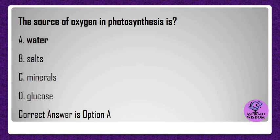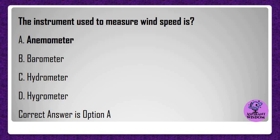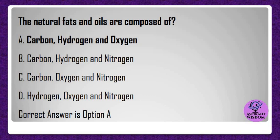The instrument used to measure wind speed is? A) Anemometer, B) Barometer, C) Hydrometer, D) Hygrometer. Correct answer is option A.